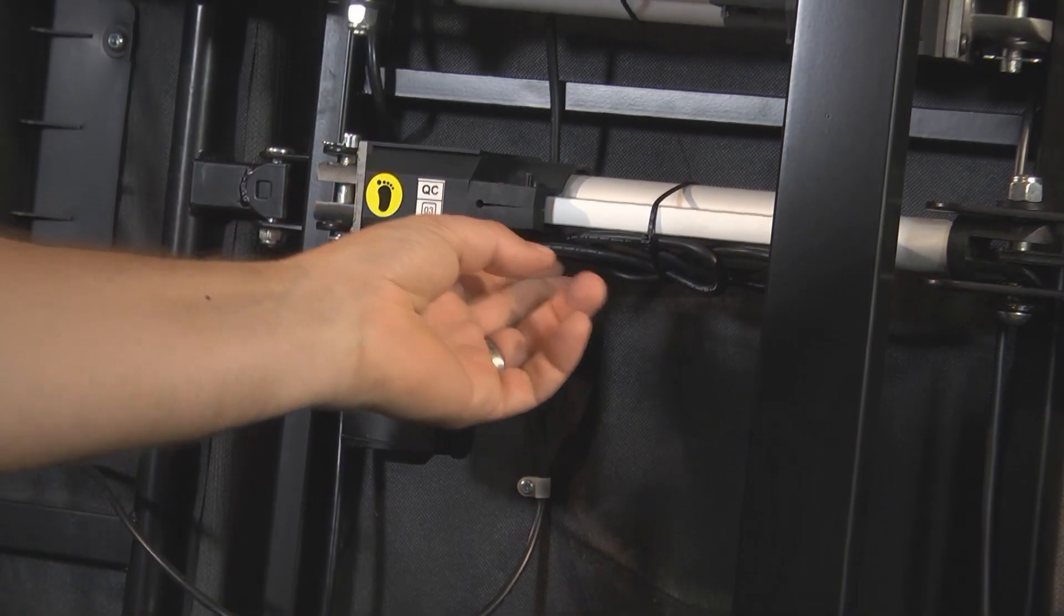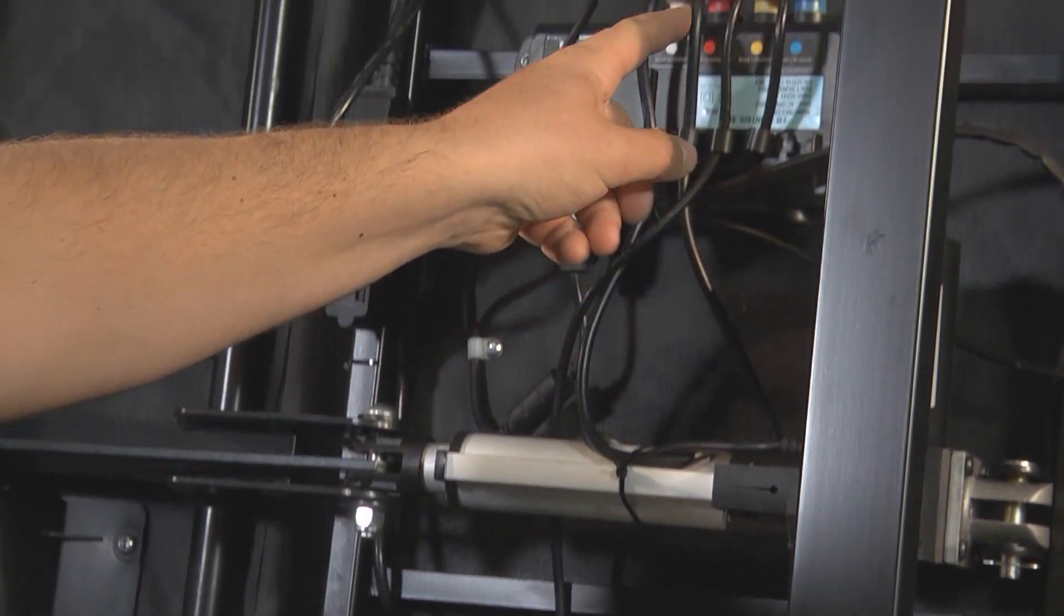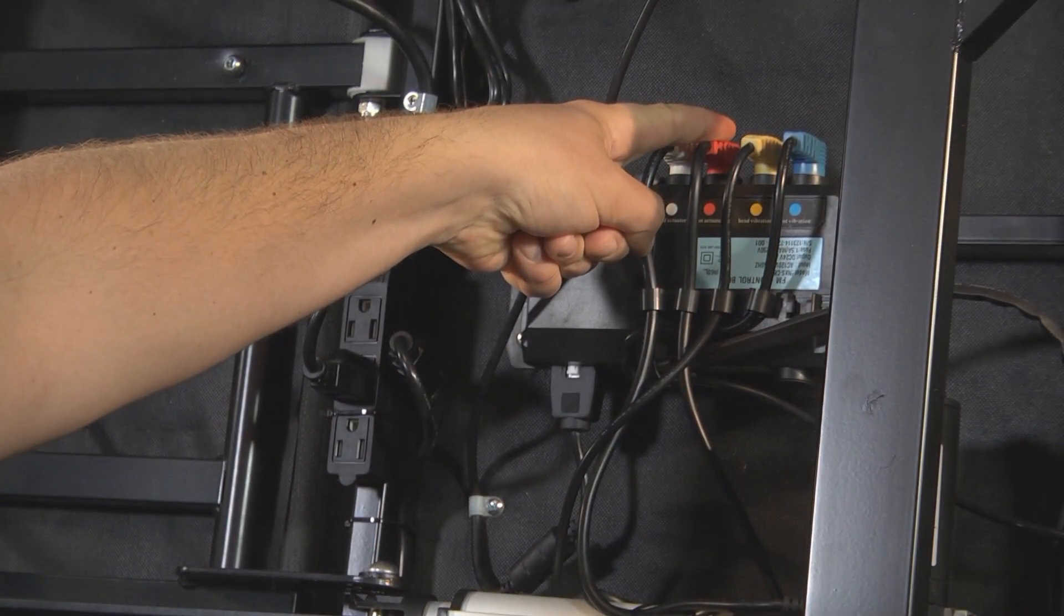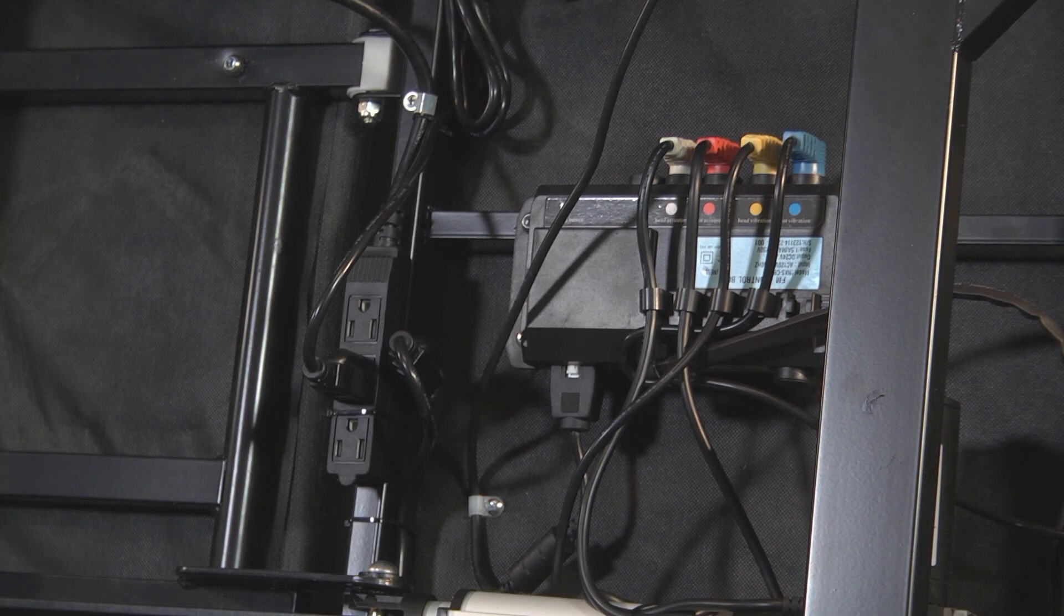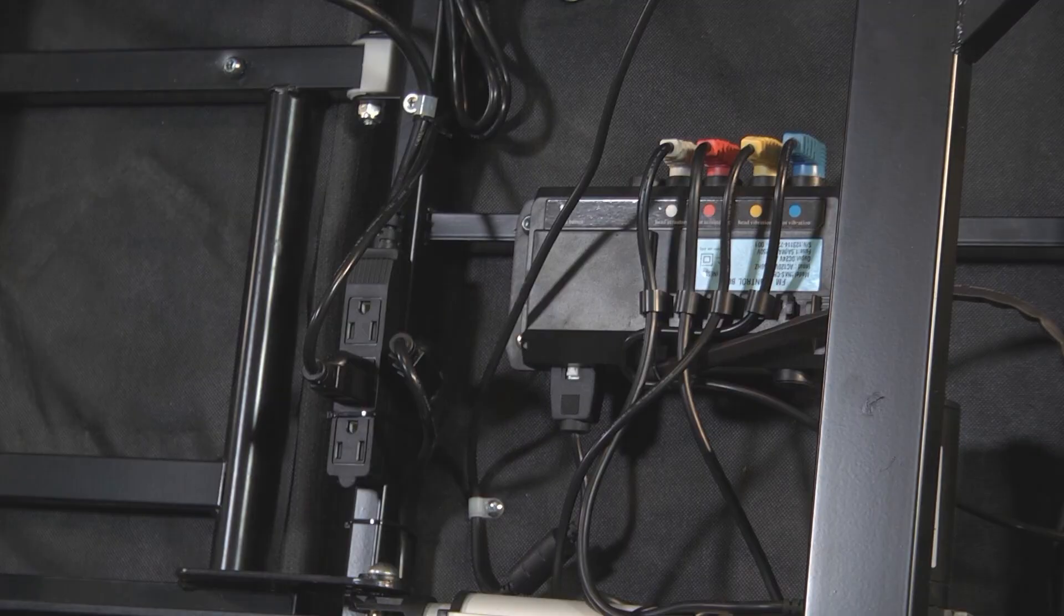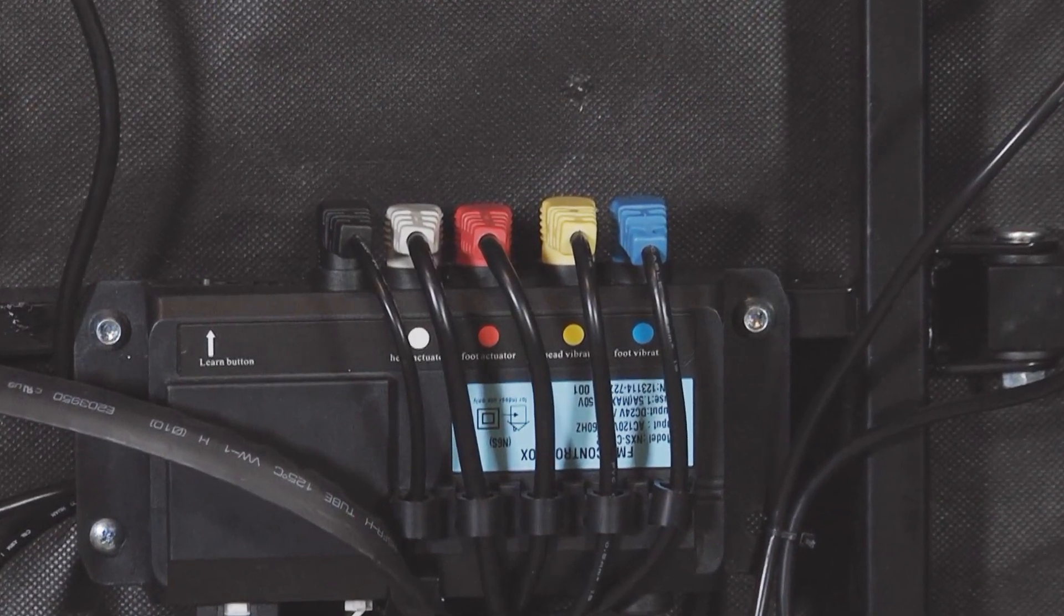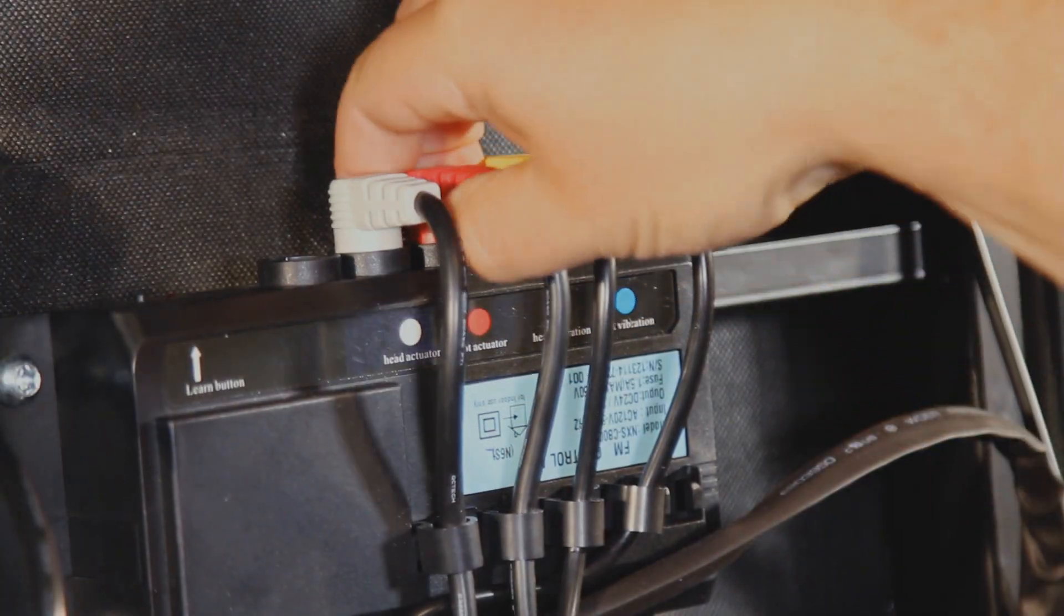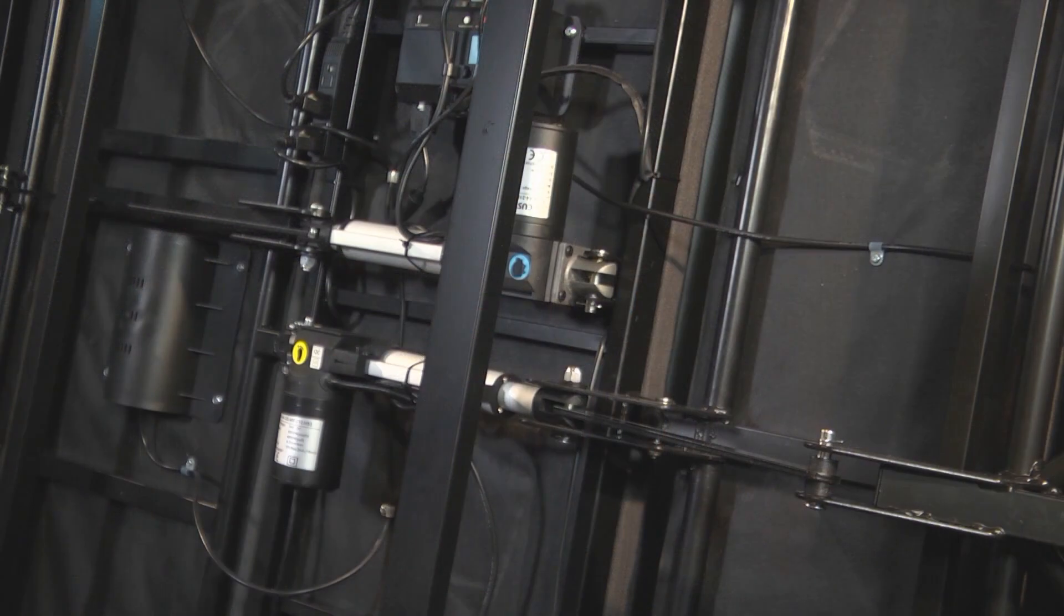Before you remove the actuator you will need to first disconnect the electrical connections that lead from the actuator to the control box. The control box is located in the middle of the adjustable base and has these colored wire covers attached to it. Each actuator is color-coded on the control box so you'll know where it is supposed to plug in. So go ahead and pull the wire that feeds the actuator you want to replace.